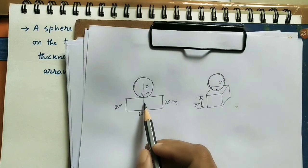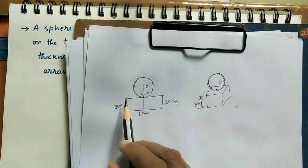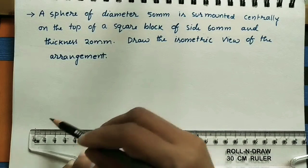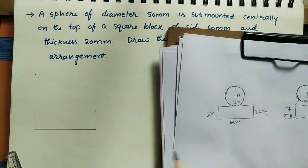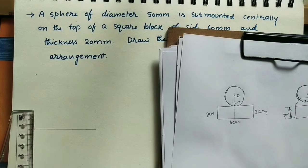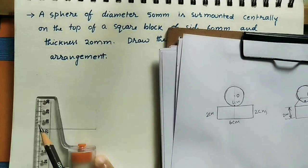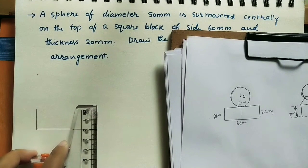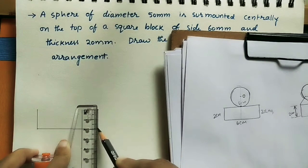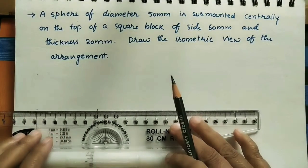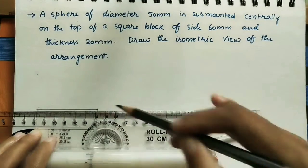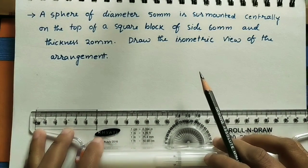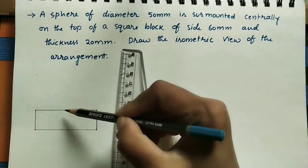We will do this diagram first — this orthographic drawing — and then the isometric drawing. Do one rectangle initially: this is 6 centimeters and this is 2 centimeters. We are doing the 6 centimeter line, take 2 centimeters this side and 2 centimeters this side. Take this as the reference, smooth the scale, and do the line on it. Mark 2 centimeters, this is 2 centimeters, join these two ends. After that find the center of this — it is 6 centimeters, so at 3 centimeters. Do one line of some length.